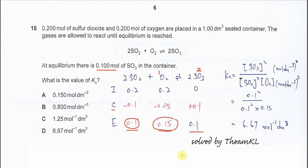Substitute these values into the K expression. It's the concentration of SO3 squared over the concentration of SO2 squared times the concentration of O2. Therefore it's 0.1 squared over 0.1 squared times 0.15, which equals 6.67.